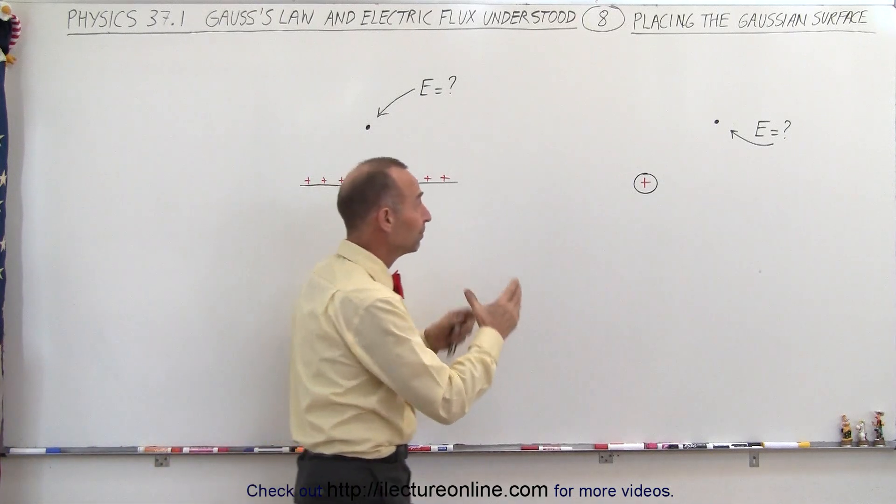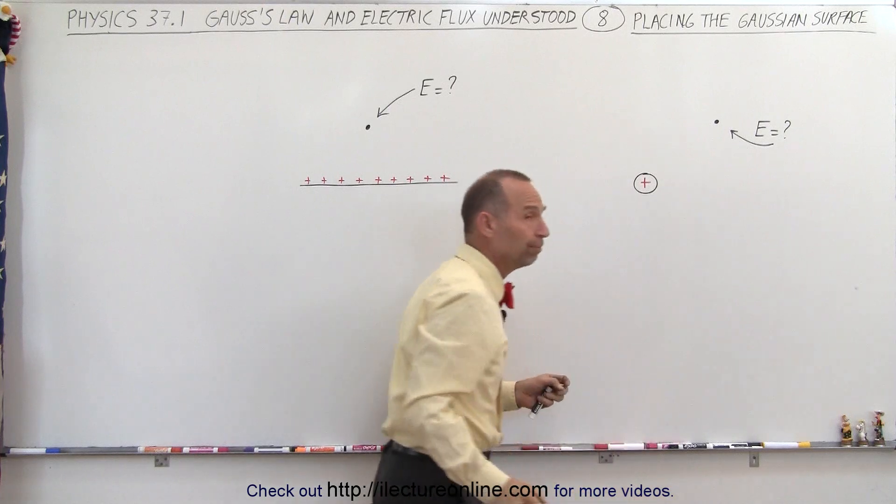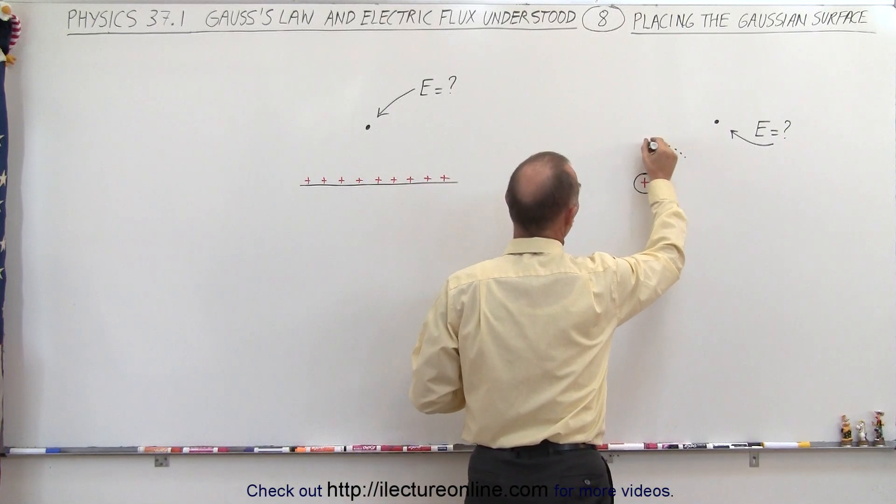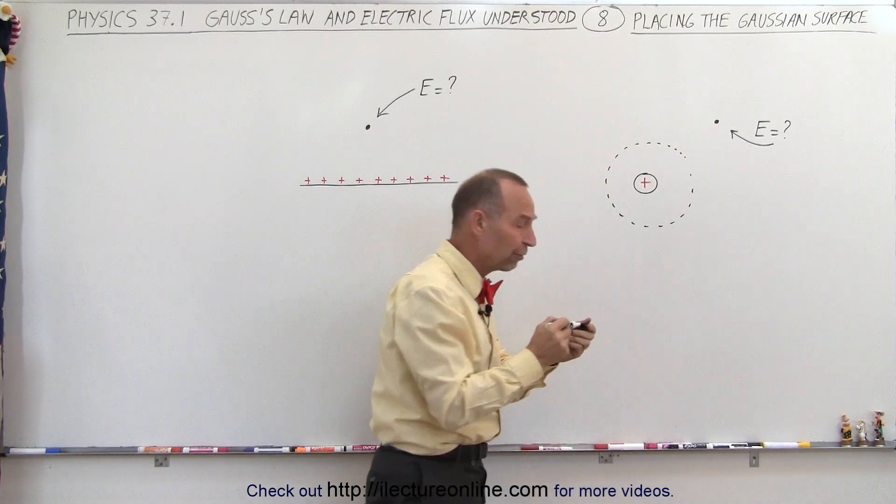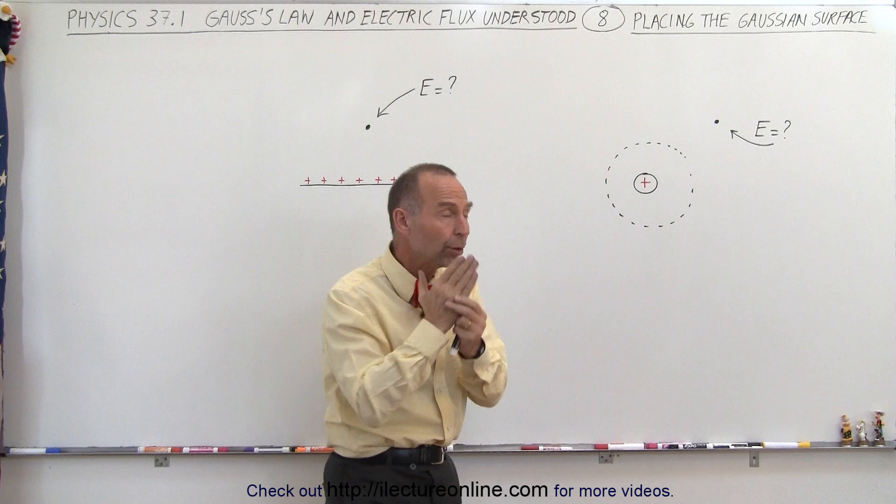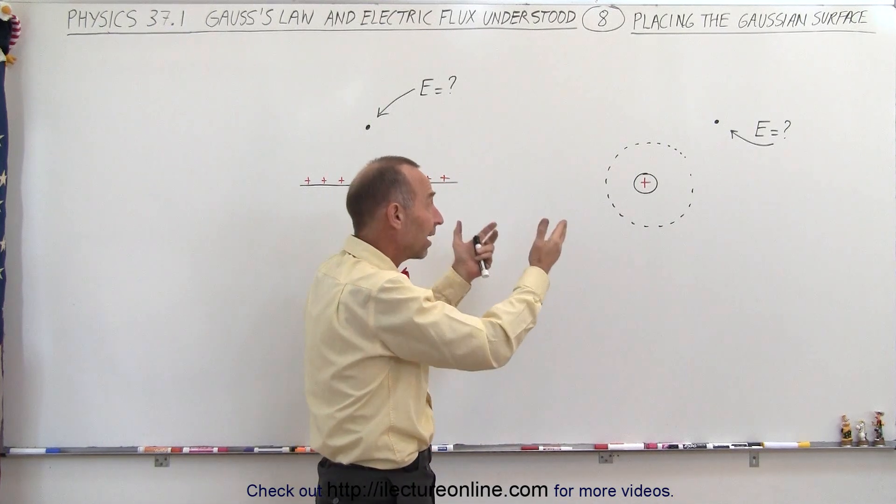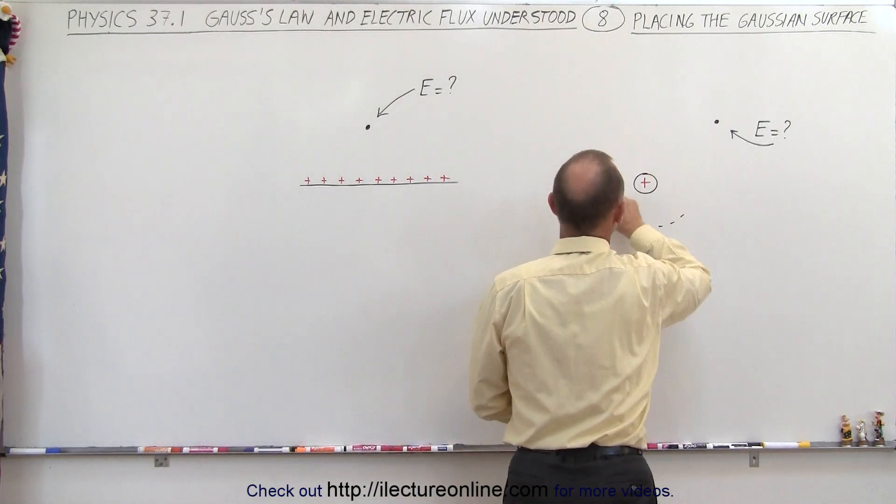Let's say we have a point charge, and I want to know the electric field strength at that particular location. Well, what if I draw a Gaussian surface like this? Would that help me? And the answer is no, because the Gaussian surface must go through the point of interest, where I want to know the electric field strength. So that Gaussian surface would not do me any good. So that's not a good Gaussian surface.